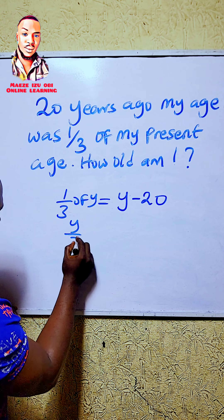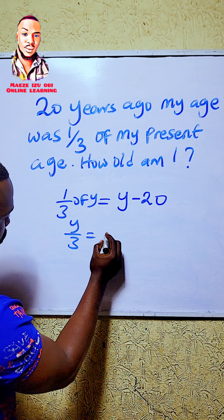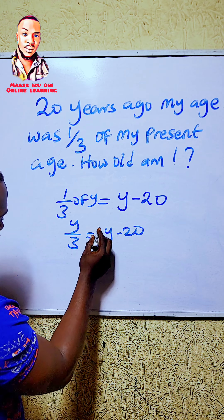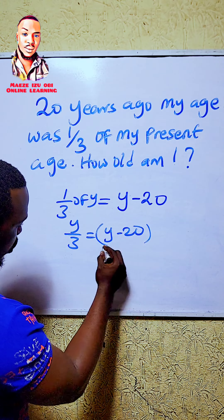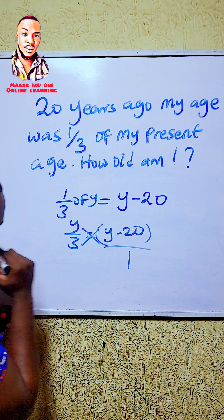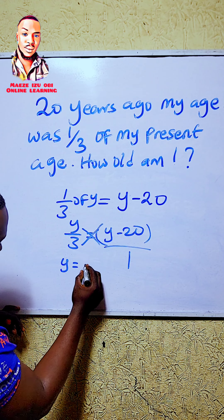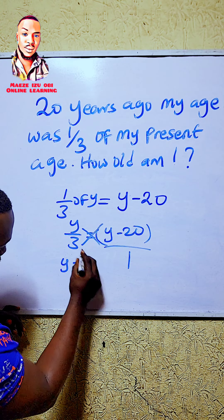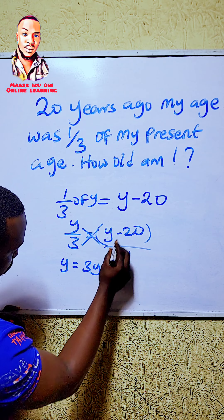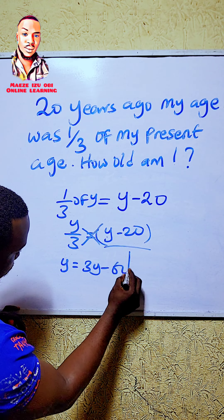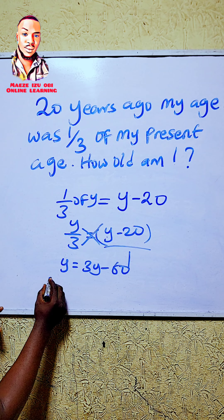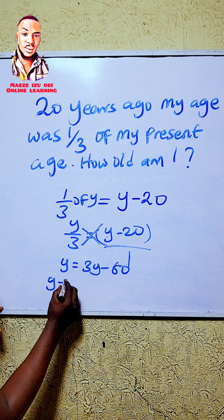Since y over 3 equals y minus 20, we cross-multiply. Multiplying gives us: 3 times (y minus 20) equals y, which expands to 3y minus 60 equals y.